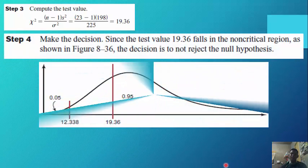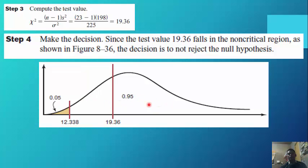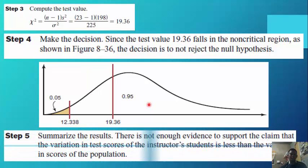Step 4: Make the decision. Since the test value 19.36 falls in the non-critical region, the decision is not to reject the null hypothesis. The critical region and the non-critical region are shown in the figure; 19.36 is located within the non-critical region. Summary: there is not enough evidence to support the claim that the variation in test scores is less than the population variance.